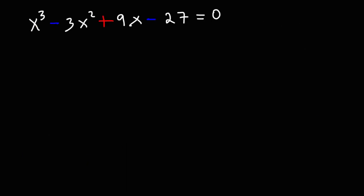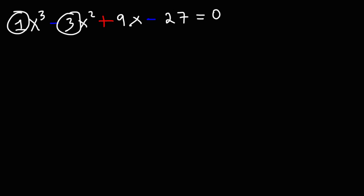Now let's work on this polynomial function. We have x cubed minus 3x squared plus 9x minus 27 is equal to 0. What are the solutions? What we can do is factor by grouping. Notice that the ratio of the coefficients of the first two terms is the same as the last two. If we divide negative 3 by 1 we get negative 3, and if we divide negative 27 by 9 we also get negative 3. When you see that, you can factor by grouping.